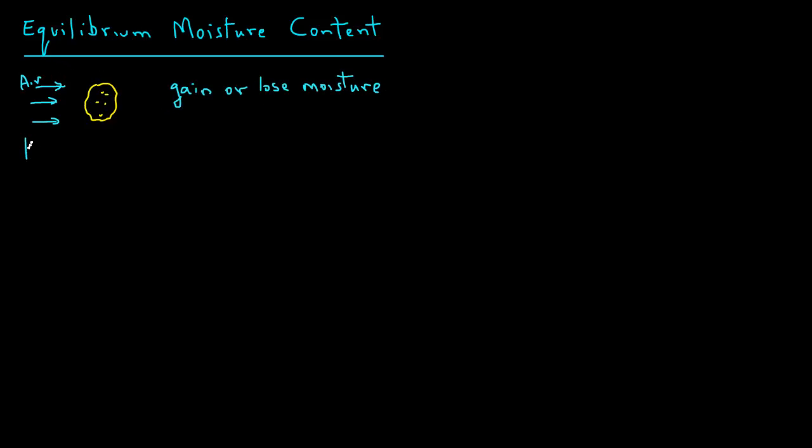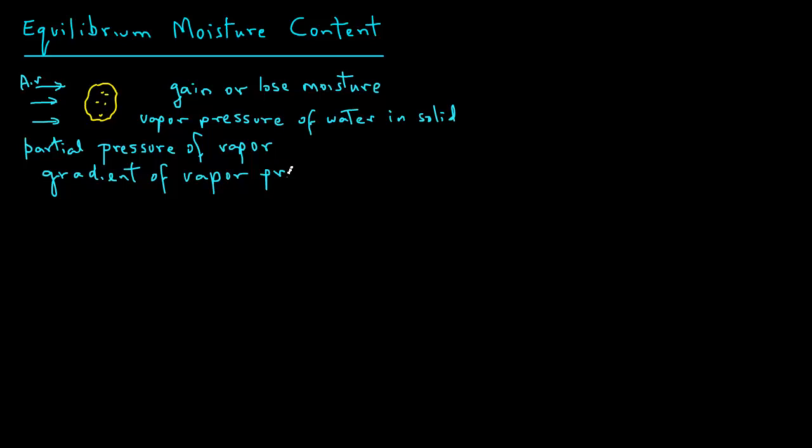gain or lose moisture. This transfer of moisture depends on the gradient of vapor pressure—the vapor pressure of water in the solid and the partial pressure of vapors in the air. The gradient of vapor pressure drives the transfer of moisture, either from the product to the air or air to the product.